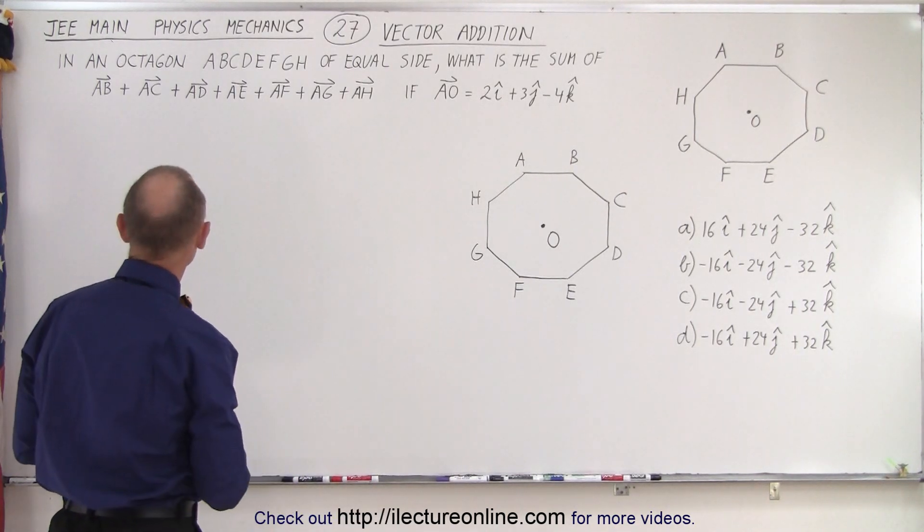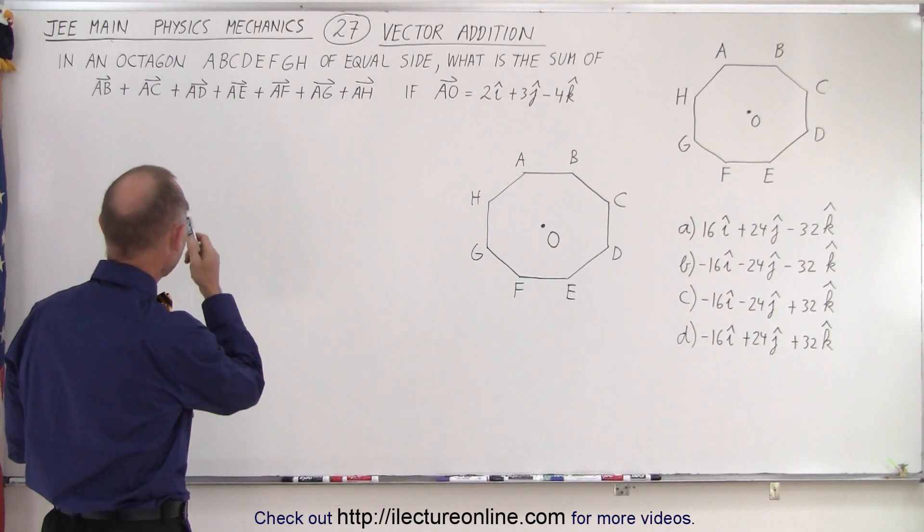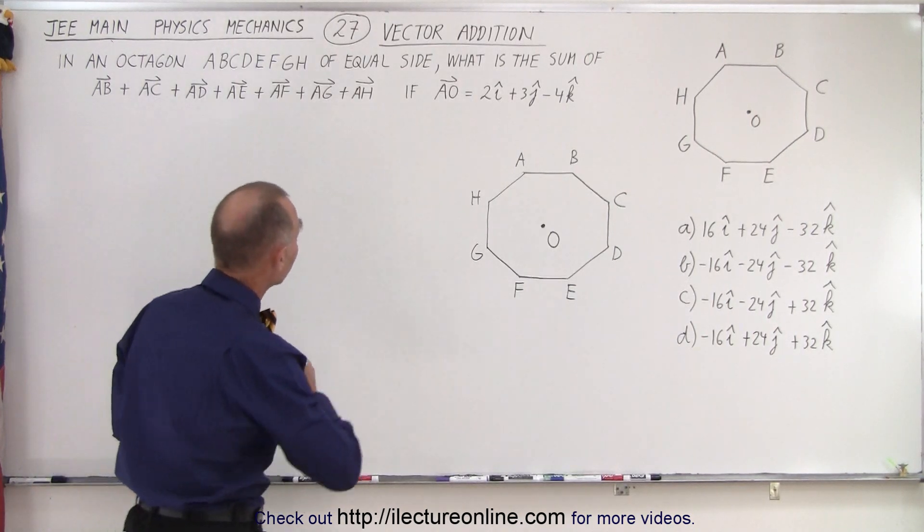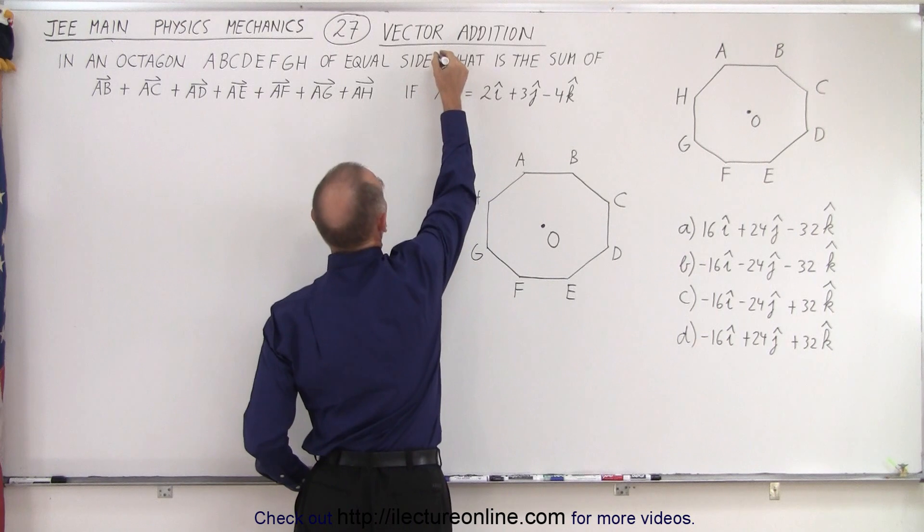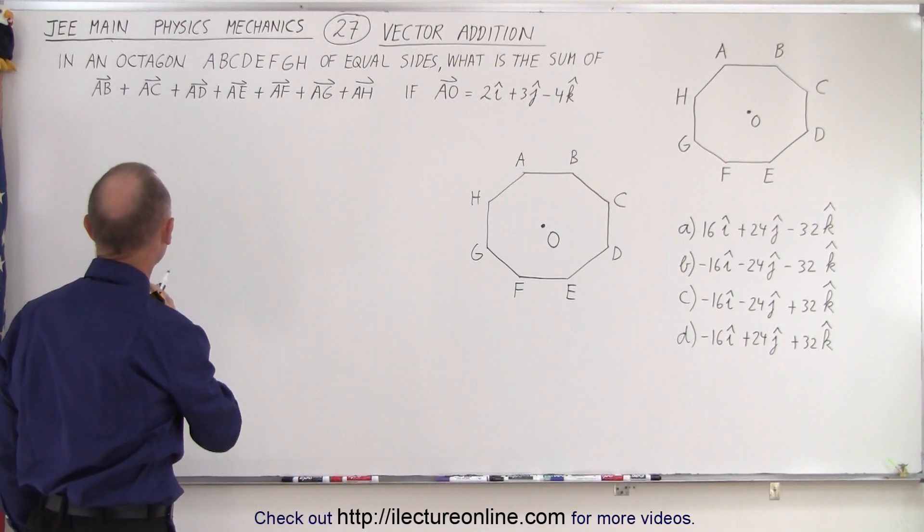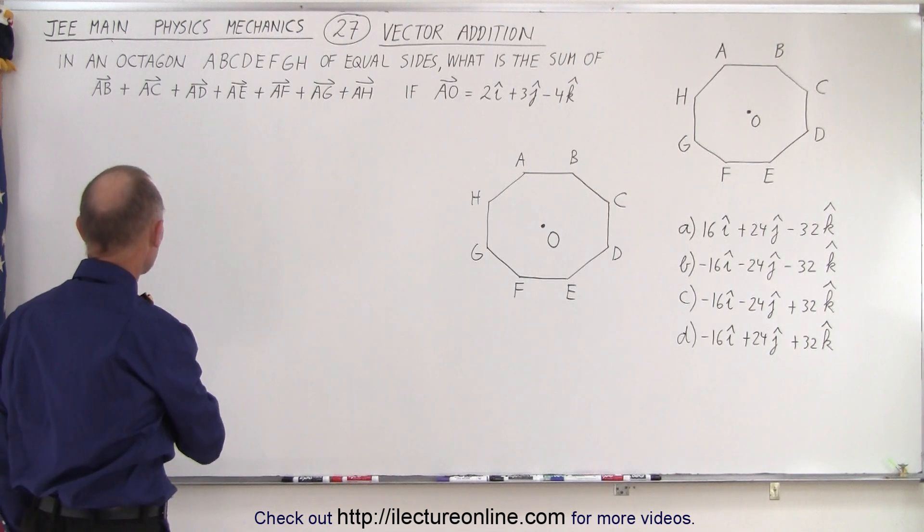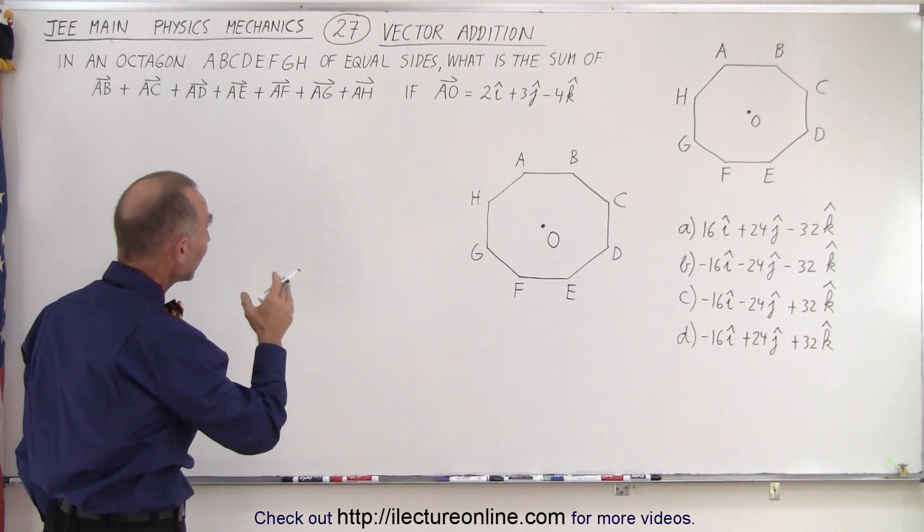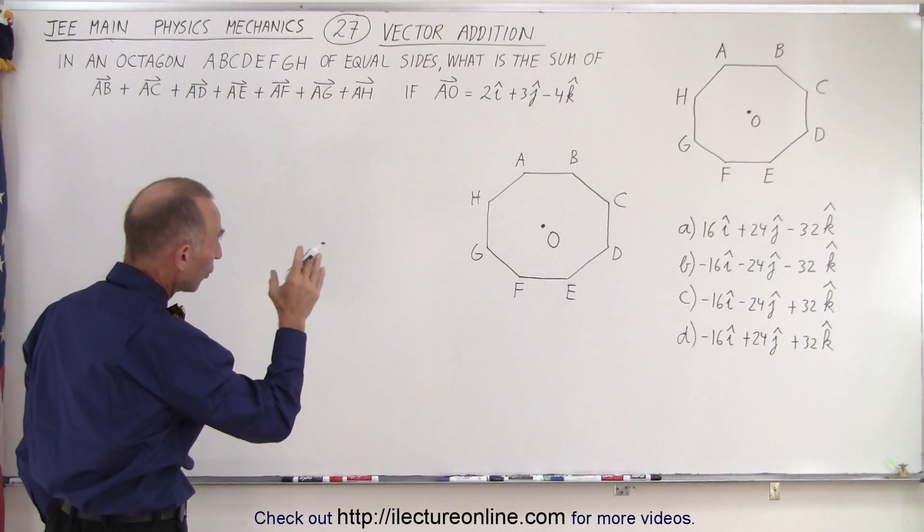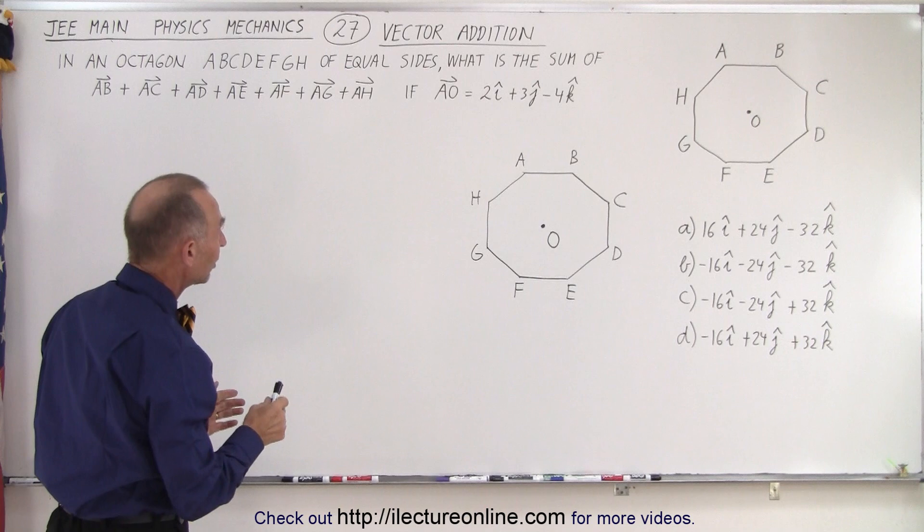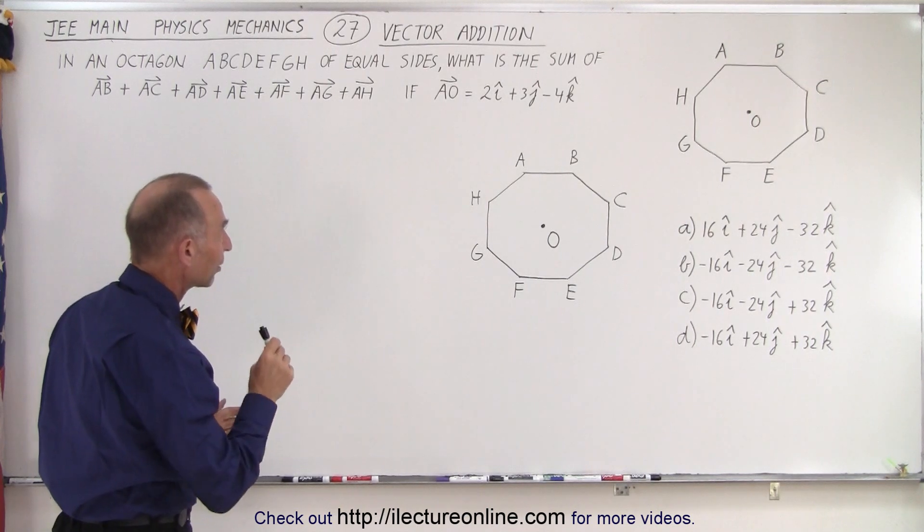It deals with vector addition. It says, in an octagon ABCDEFGH of equal sides, what is the sum of the vector from A to B, plus from A to C, from A to D, from A to E, all the way from A to H, if from A to the origin, if that's in the middle of the octagon, that is equal to 2I plus 3J minus 4K.